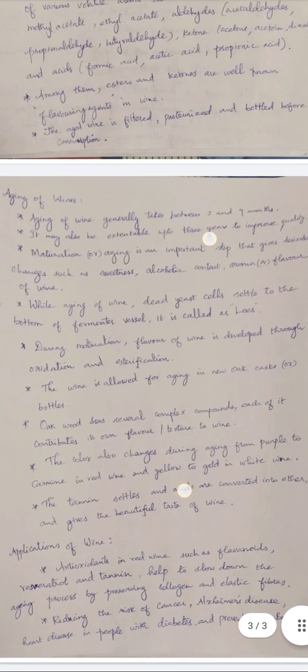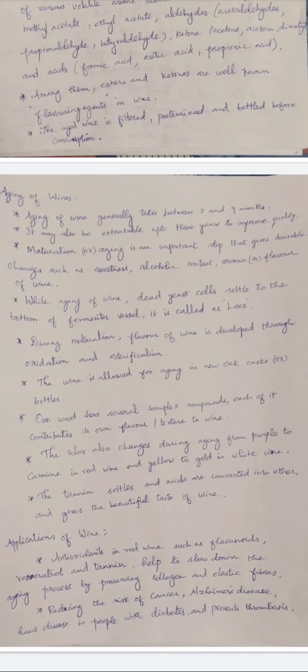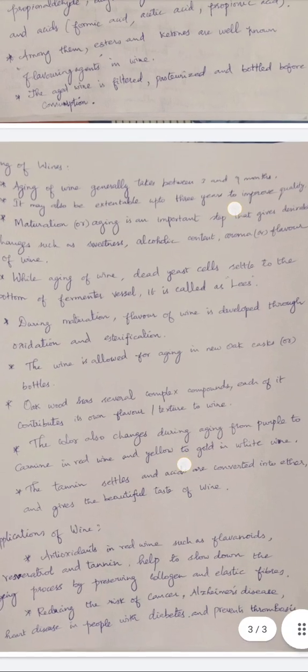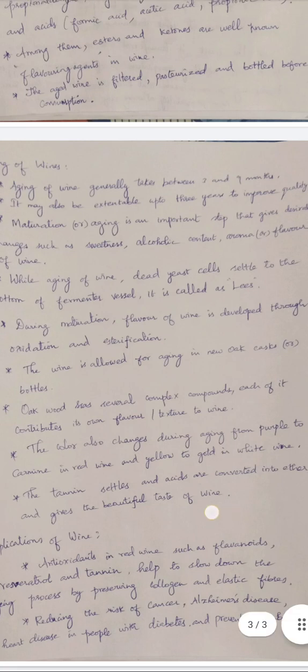Aging of wine generally takes place between three to nine months, and may be extended up to three years to improve quality. Maturation or aging is a very important step that gives desirable flavor, odor, alcohol content, sweetness, and aromatic characteristics. During aging, dead yeast cells settle to the bottom of the fermentation vessel — simply called lees — and flavor develops through oxidation and esterification.